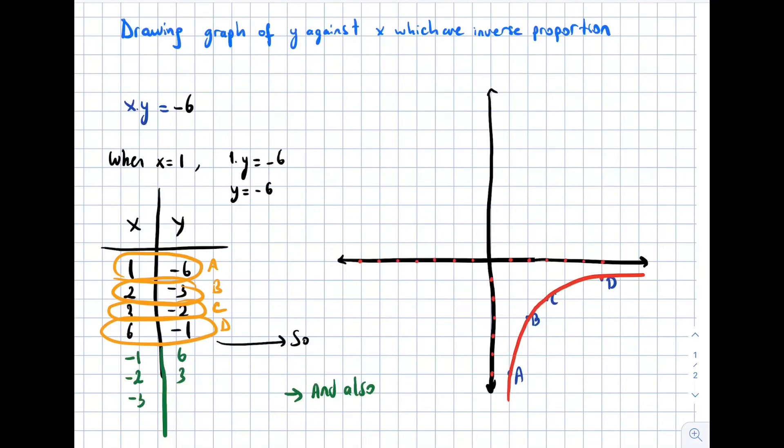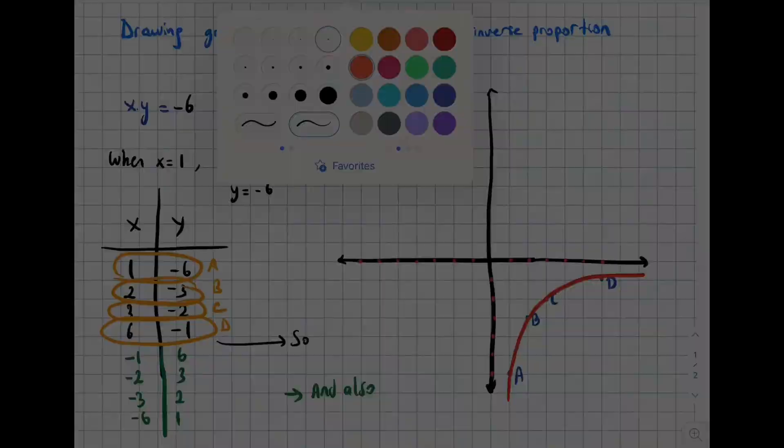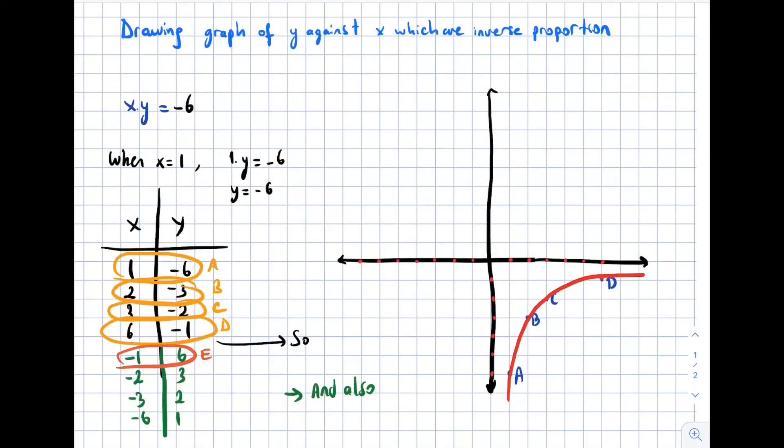When x is negative 1, if you replace x with negative 1 in the equation you'll find y is 6. When x is negative 2, y is 3. So we have four points again, we are going to name those points E, F, G, and H.